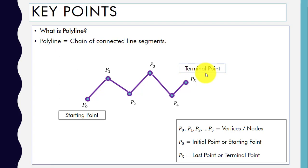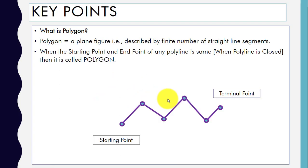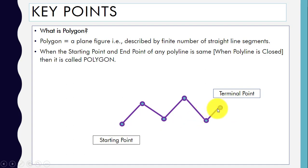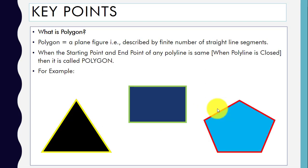Now, what is a polygon? A polygon is a plane figure described by a finite number of straight line segments. When the starting point and the terminal point of any polyline are the same, it is called a polygon — meaning when the polyline is closed, it is called a polygon.